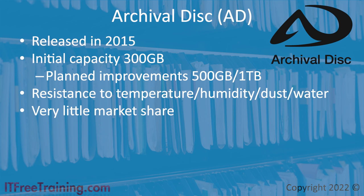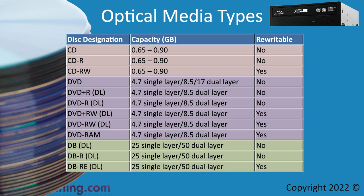Next, I will have a look at the different media types for optical drives. There are a lot of different optical media types. The three different types of media are CD, DVD, and BD. When the media is written without any additional letters after it, it is referring to optical disks that are manufactured. In the case of CD or compact disk, the minimum amount of data that can be stored is 650 megabytes up to a maximum of 900 megabytes. CDs were originally designed for audio and later used for data.